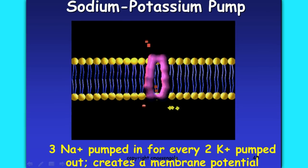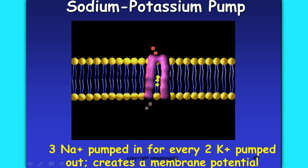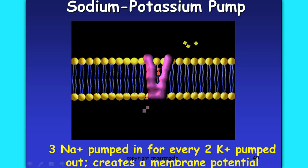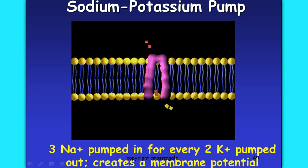There are three sodium molecules pumped out for every two potassium pumped in. So you can see how the two potassium get moved in and three sodium get pumped out. As that special protein faces inward, it picks up the sodium — the red molecules — and that bonding causes a change in the protein structure. Then the three yellow potassium molecules are able to bond.